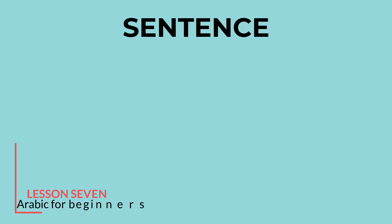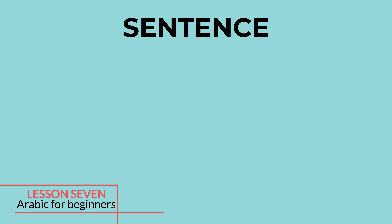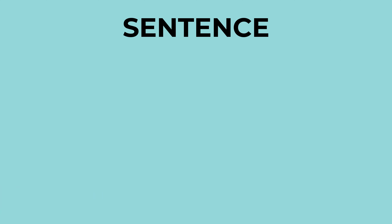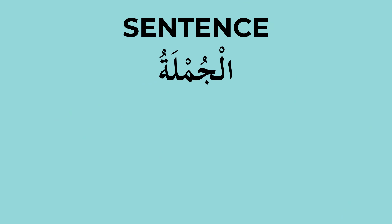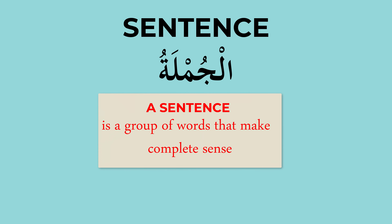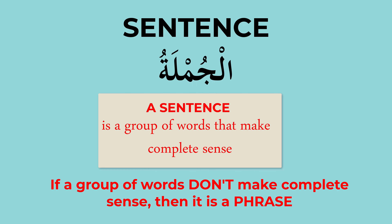Welcome to this new Arabic course. When you say a sentence, in Arabic we say al-jumlatu. A sentence is a group of words which makes complete sense. A group of words which does not make complete sense is not a sentence — we call it a phrase. Here we are concerned with sentences.